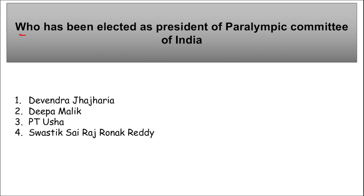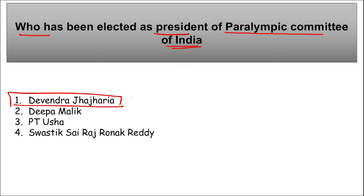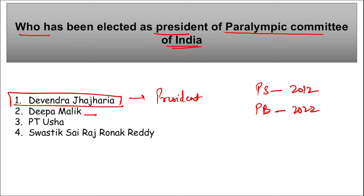Devendra Jhajharia was elected as the president of the Paralympic Committee of India, succeeding para-athlete Deepa Malik whose term ended on 31st January 2024. Jhajharia was honored with Padma Shri in 2012 and Padma Bhushan in 2022 in the field of sports.